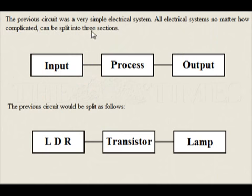The previous circuit was a very simple electrical system. All electrical systems, no matter how complicated, can be split into three sections: input, process, and output.